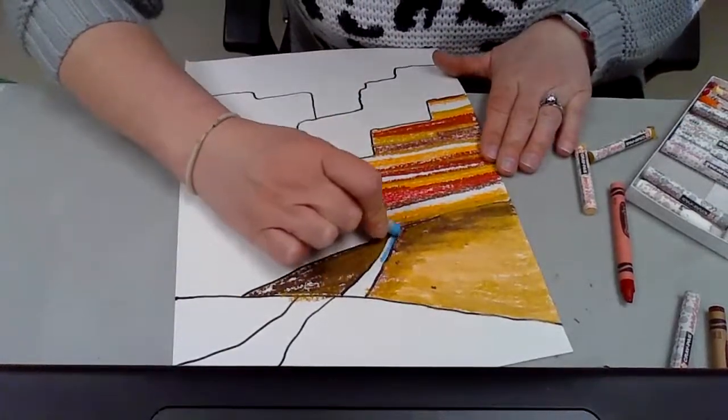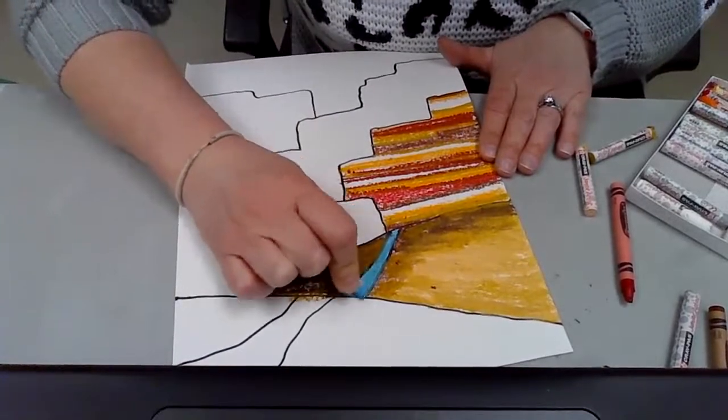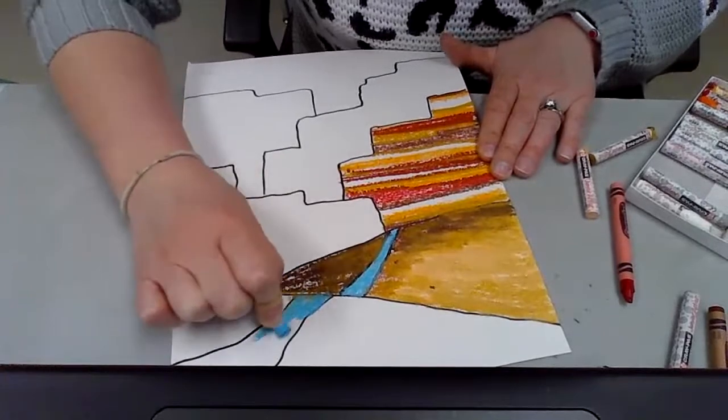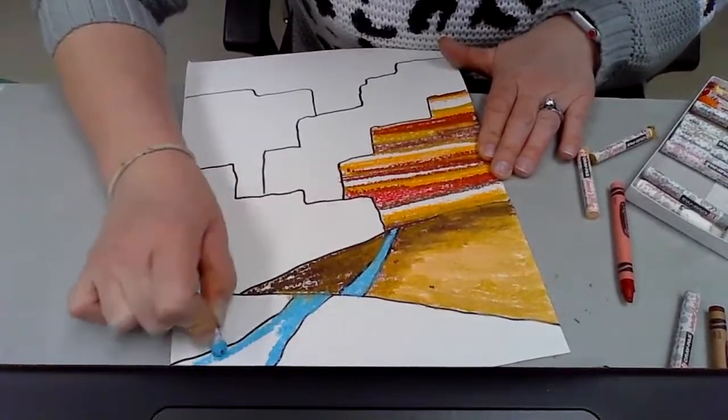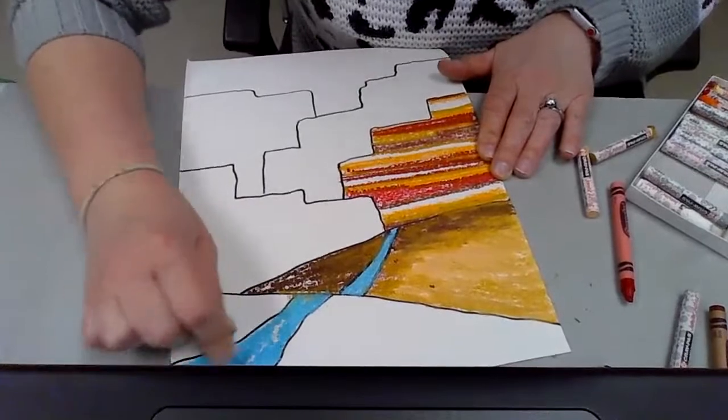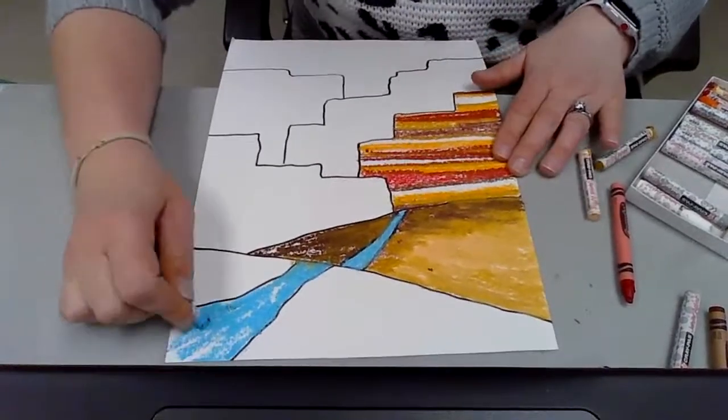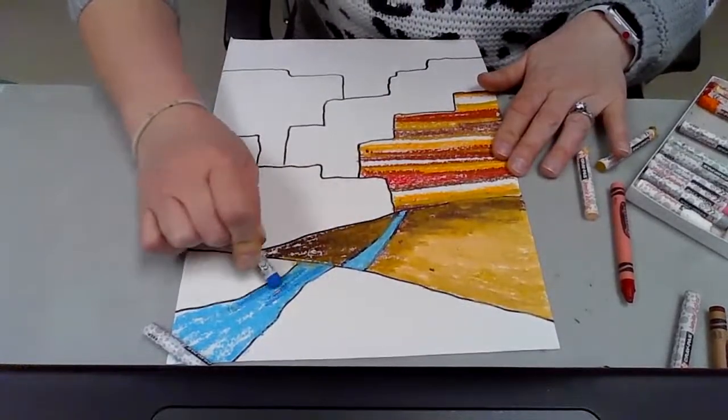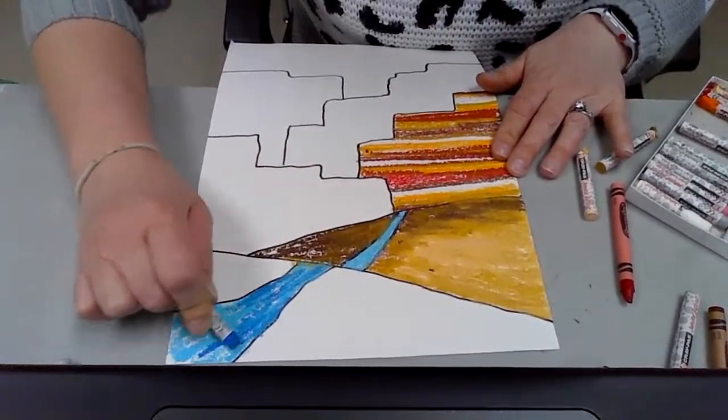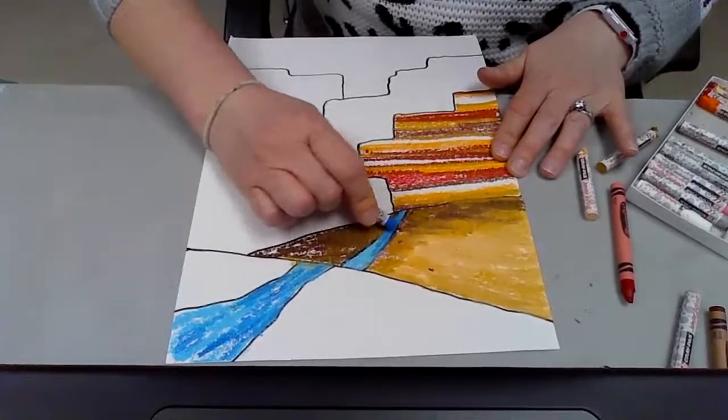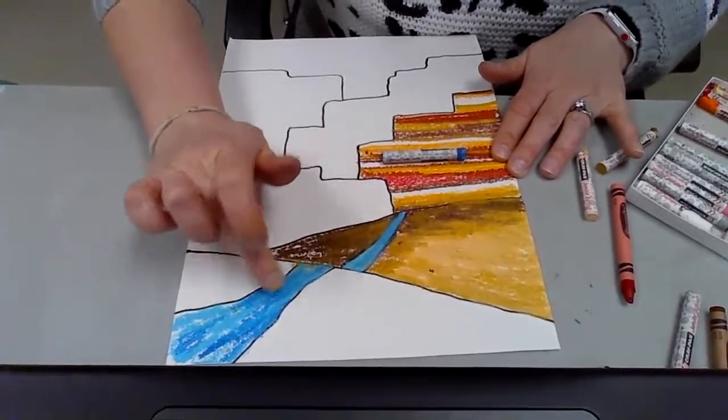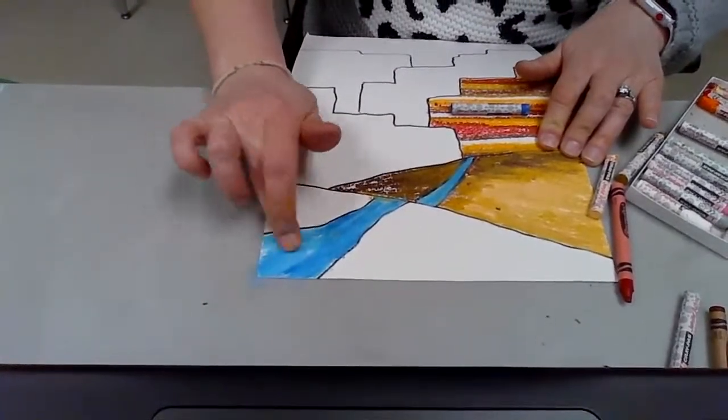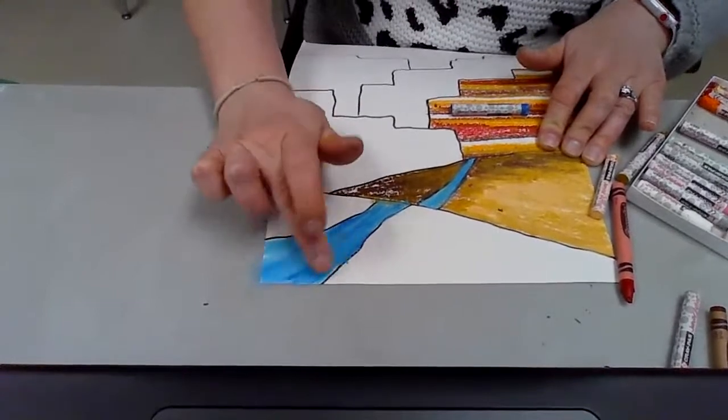feel free to blend with your fingers. You can also blend with a tissue or paper towel, although that seems to not work quite as well. Fingers really work best for this. Or actually, if you have any baby oil at your house and a little Q-tip, that actually does the best blending for oil pastels. But you can go in there and you can blend them together with your finger. I don't love how that feels on my finger, but you can do it.